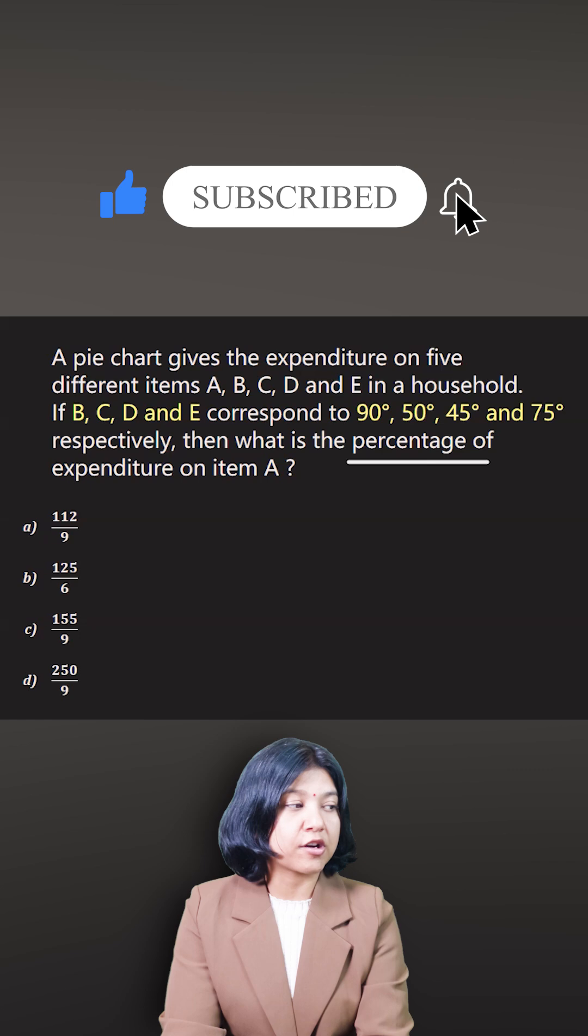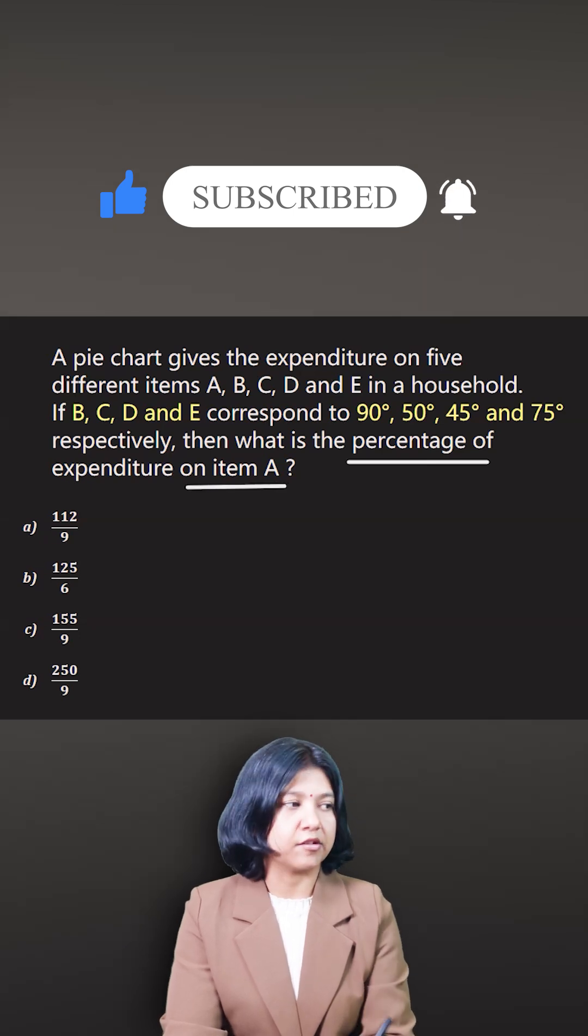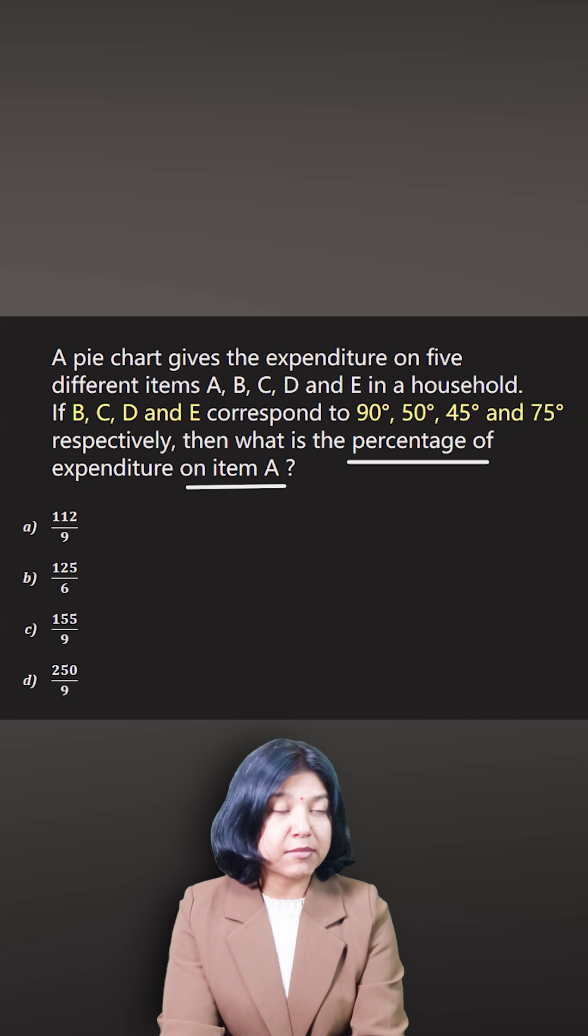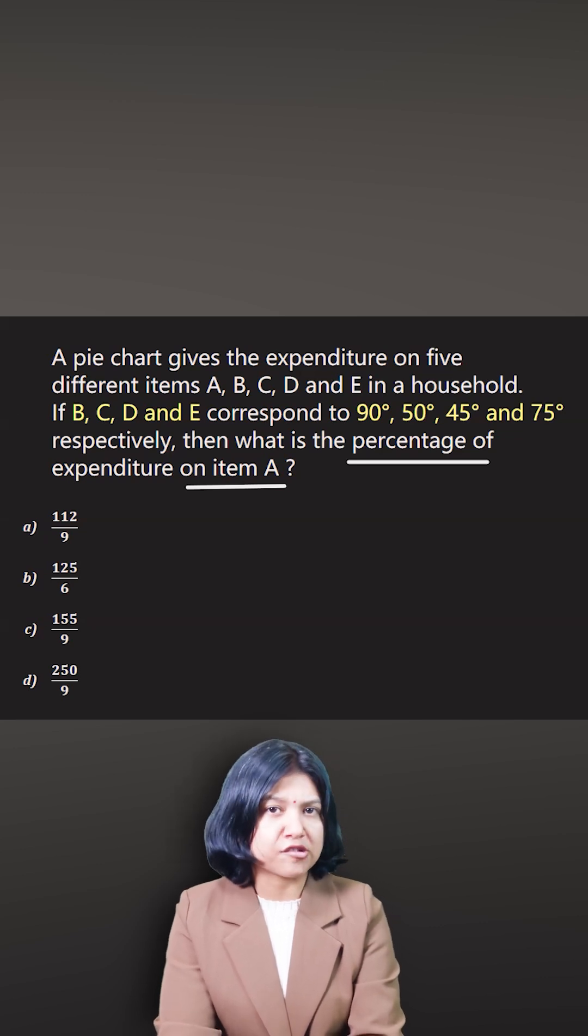First of all, you have been given four angles out of five. I'll add them up quickly because the total of angles is always 360.